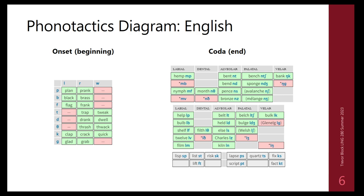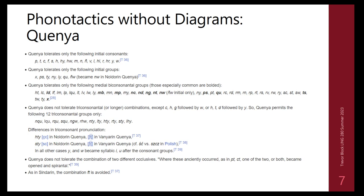Another way to visualize phonotactics is charts covering syllable onsets and codas. English doesn't include clusters like 'gw' in native words — though loan words like 'guacamole' have it — and we also don't see 'tl', 'dl', 'fl', or 'fu' in native English vocabulary. When phonotactic information becomes very complex, some conlangers present it as lists, which can be harder to follow but is sometimes the only practical option.